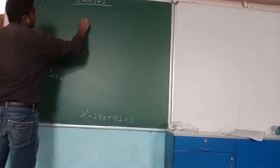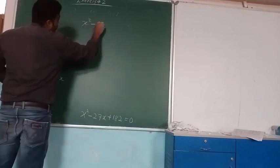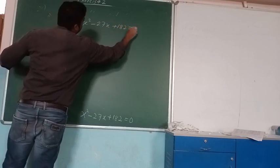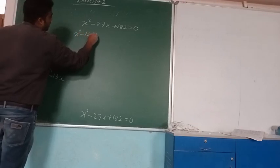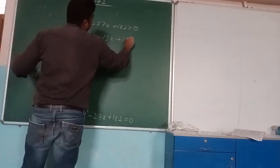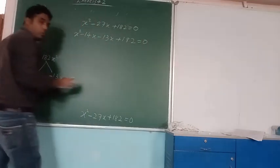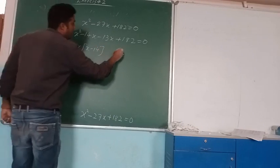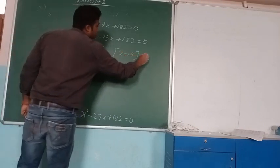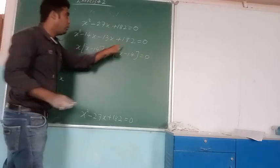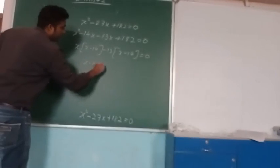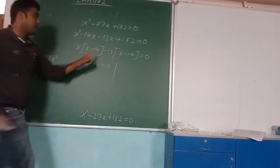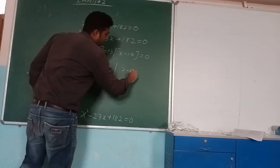The equation is x squared minus 27x plus 182 equals 0. Substituting the factors: x squared minus 14x minus 13x plus 182 equals 0. Taking x common from the first two terms gives x(x minus 14), and taking minus 13 common from the last two terms gives minus 13(x minus 14) equals 0. So we get (x minus 14)(x minus 13) equals 0.